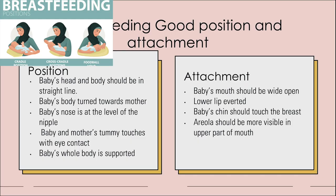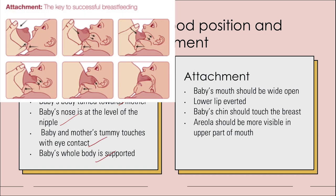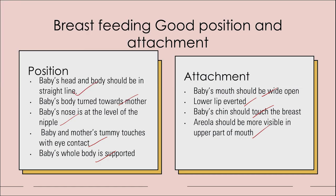For breastfeeding positioning: the baby's head and body should be in a straight line, body turned towards the mother, nose at the level of the nipple, tummy touching the mother's tummy with eye contact, and whole body supported. For attachment: the baby's mouth should be wide open, lower lip averted, chin should touch the breast, and the areola should be more visible in the upper part of the mouth.